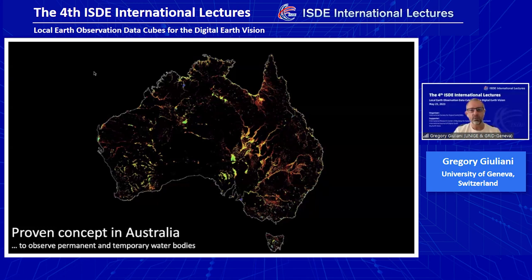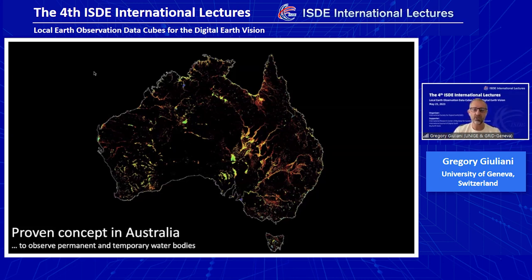The country that pioneered this technology is Australia. They proved the concept using analysis-ready data about 10 years ago, and they were able to release a beautiful map of permanent and temporary water bodies. They developed an algorithm that looks at the frequency of observation of water across the entire Australian continent for the last 25 to 27 years, and then produced these beautiful maps. It was really enlightening at that period.